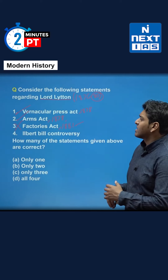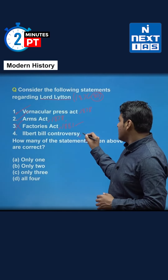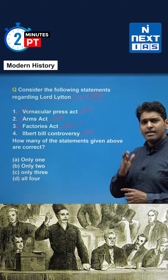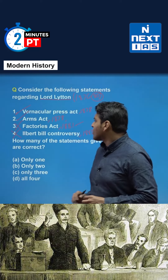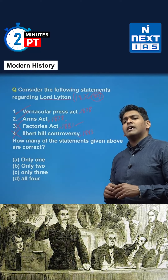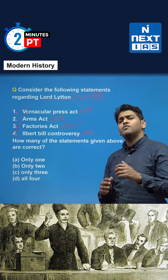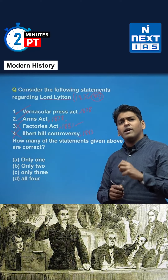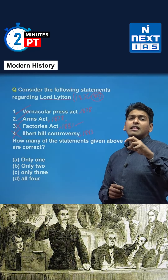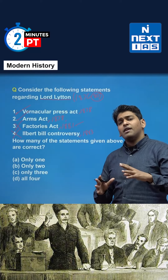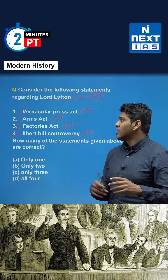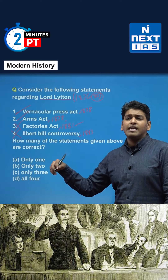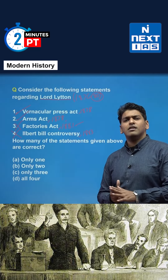The next option is the Ilbert Bill controversy, which occurred in 1883 — also not under Lytton, but during Lord Ripon's time, as Ripon served from 1880 to 1884. Lord Ripon sought to extend legal equality by addressing bias in the judicial system, where European judges would give much lighter punishments to Europeans compared to Indians for the same crime. Along with Justice C.P. Ilbert, he drafted a bill to remove this discrepancy.